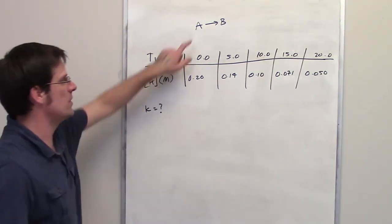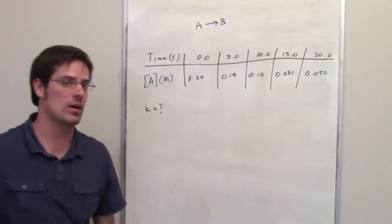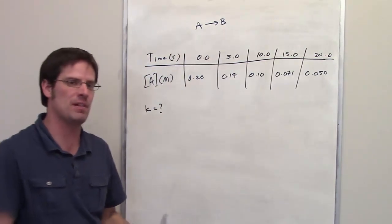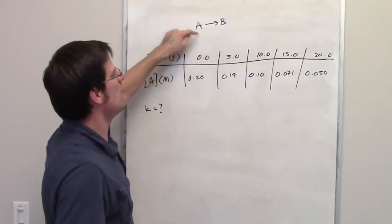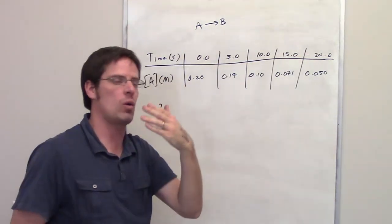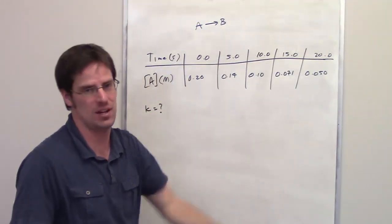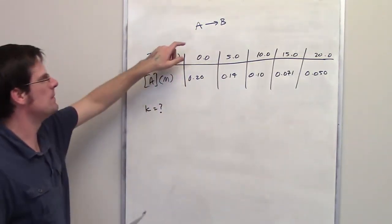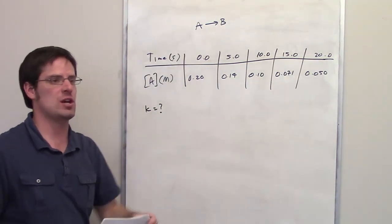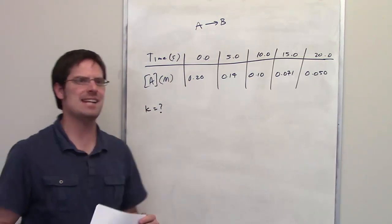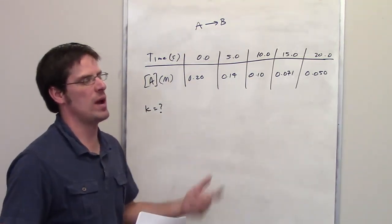reactions that look as simple as this can be second order or third order with respect to A. For example, if you had a reaction that was second order with respect to A, it means that if you doubled the concentration of A, it would quadruple the rate of the reaction. If it were a third order with respect to A, it means that if you doubled the concentration of A, it would eight-tuple the rate of the reaction.